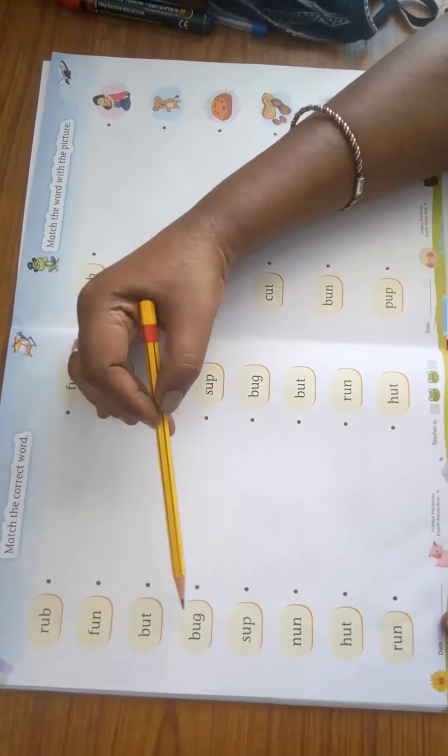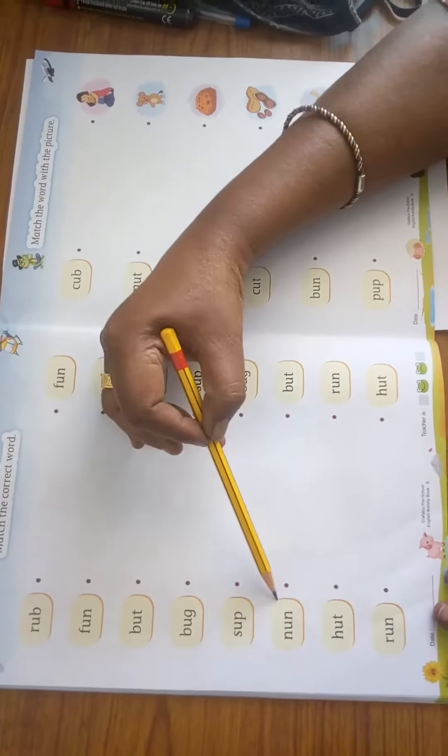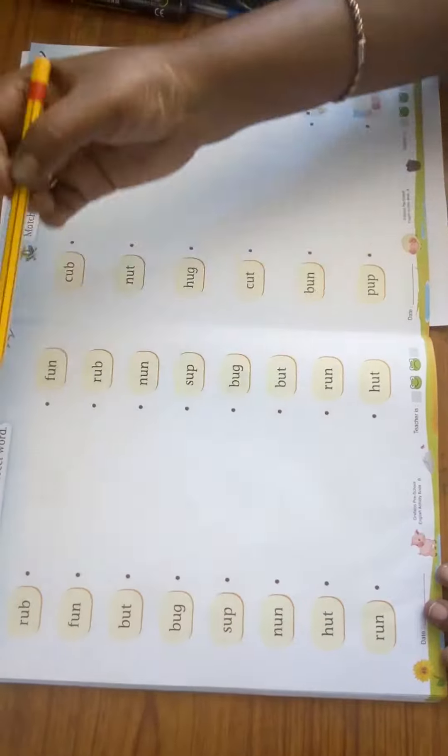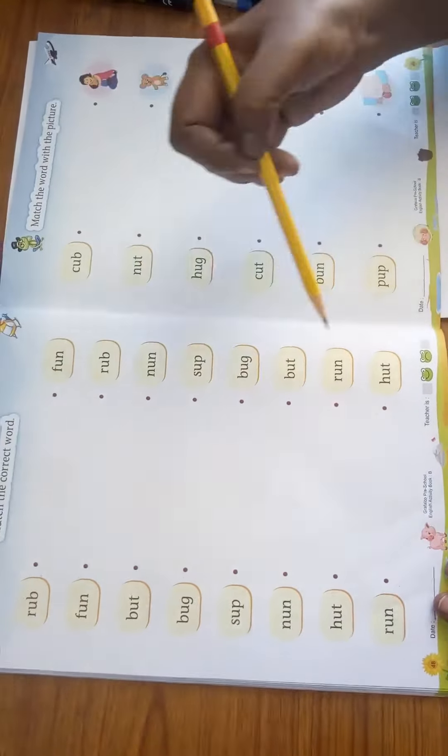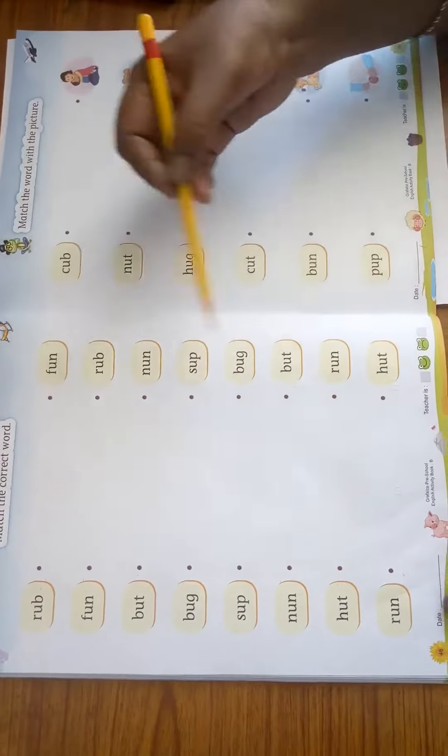Rub, fun, butt, bug, sap, nun, hut, run. Here it is given in jumble. You have to see this word and you have to rub. Do the matching.